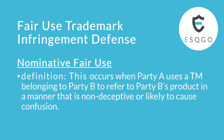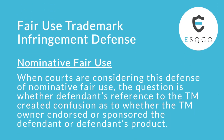Nominative fair use is kind of similar but there are differences. Nominative fair use occurs when party A uses a trademark belonging to party B to refer to party B's product in a manner that is non-deceptive and not likely to cause confusion. When courts consider this defense, the key question is whether the defendant's reference to the trademark created confusion as to whether the trademark owner endorsed or sponsored the defendant or their product.